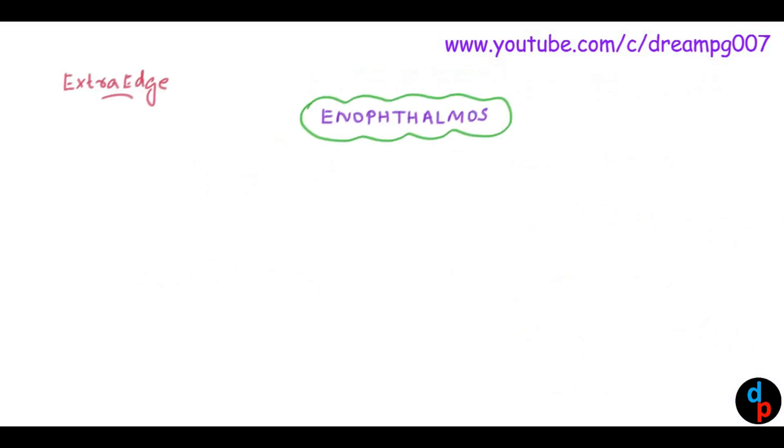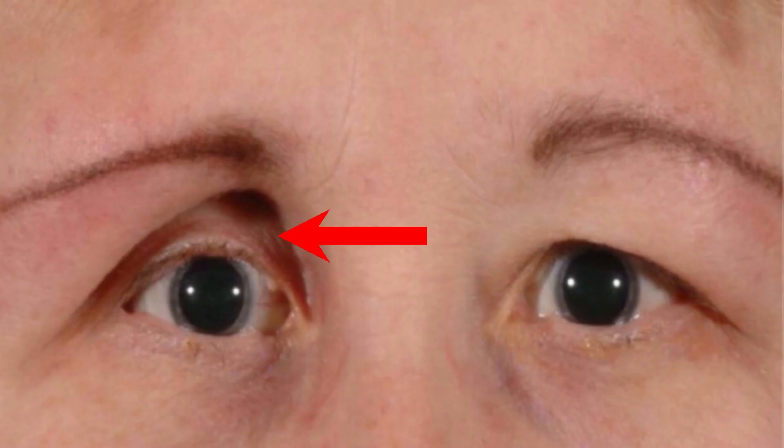Enophthalmos. Enophthalmos is the posterior displacement of eyeball inside the orbit. This is an image showing the enophthalmos.